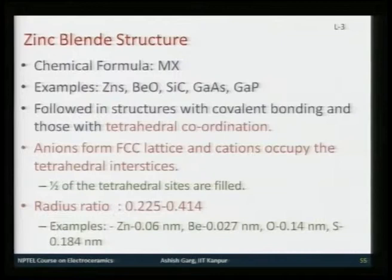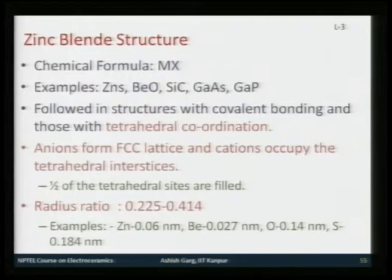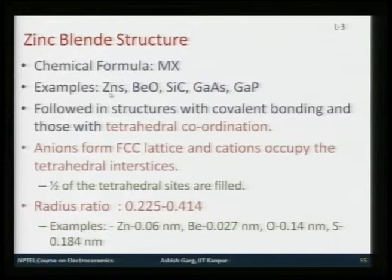Now we will look at another important FCC structure: the zinc blende structure. In this structure the chemical formula would be MX, so for each cation you have one anion and the valence of both cation and anion is equal. Examples of such ceramic materials include zinc sulfide, beryllium oxide, zinc oxide, and silicon carbide.